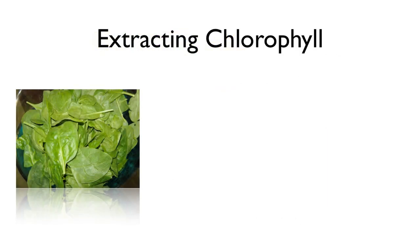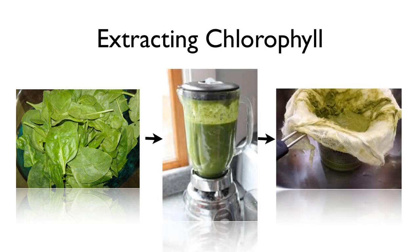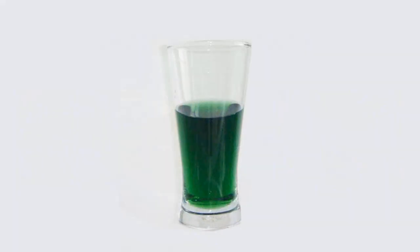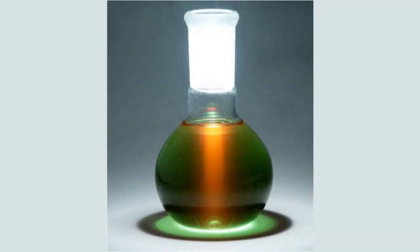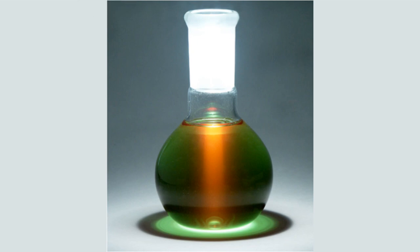You can actually extract chlorophyll yourself in your own kitchen. I like to use spinach. You'll need a blender and some cheesecloth, and you need to blend it not in water — that won't work — but in an organic solvent like petroleum ether, acetone, or methanol. Don't drink this smoothie. If you filter it through the cheesecloth, you'll get a nice solution of chlorophyll. Shine light on it and you'll see something really cool — it's going to glow red. This is called fluorescence, and understanding why chlorophyll fluoresces is important for understanding the light reactions.